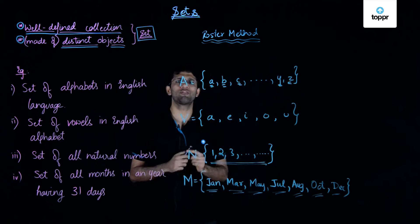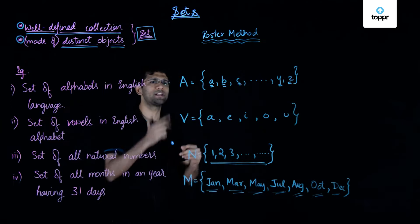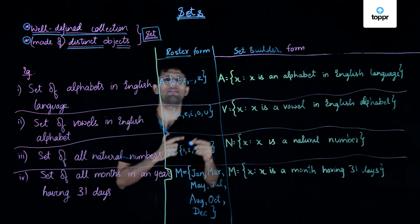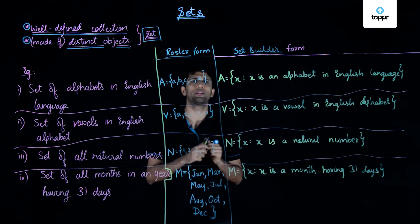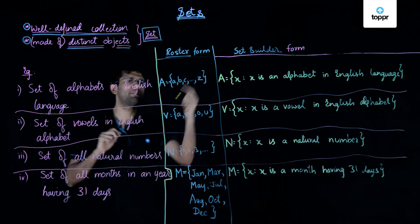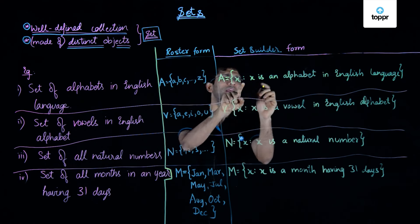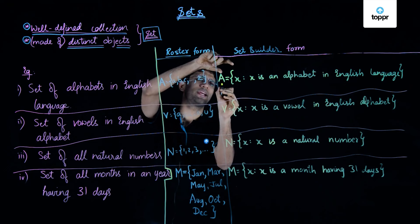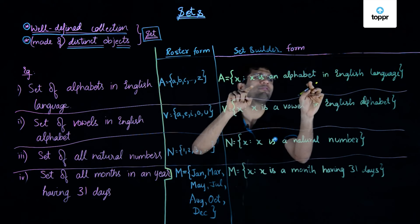There is yet another representation of a set — we can represent a given set using another notation. Having seen the roster form, let us now look at another form: the set builder form. For example, if I want to write the set of alphabets in English language using the set builder form, I write: set A equals all elements x such that x is an alphabet in the English language.